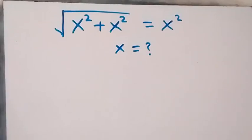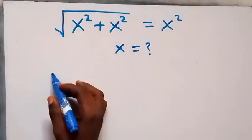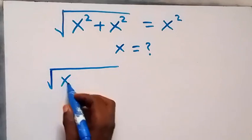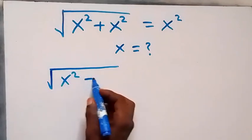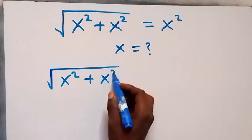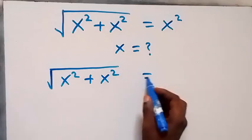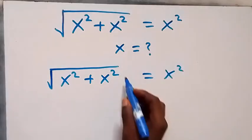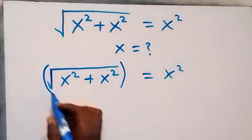Hello, you are welcome to solve for x in this algebra equation involving roots. Here we have the square root of x squared plus x squared, which equals x squared. From here we can square both sides.